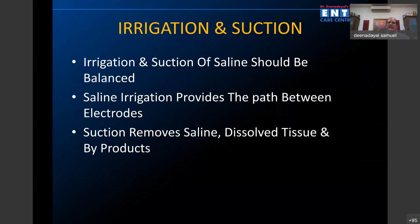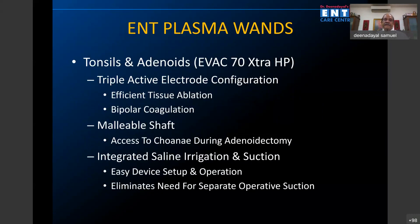Irrigation and suction of saline should always be balanced. The saline irrigation provides the path between electrodes — when saline irrigation is less, co-ablation will not be at its optimum. Suction should be sufficient to continually remove the saline and dissolved tissue and byproducts.